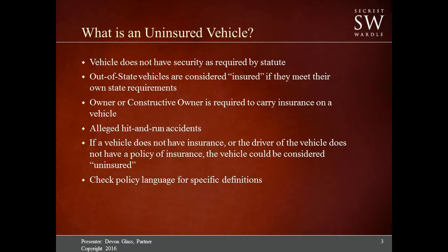An uninsured vehicle could also involve a hit-and-run accident. If somebody alleges their vehicle was contacted or pushed off the road and the other vehicle fled the scene with no information and that person is not found, that would be considered a hit-and-run and would be considered an uninsured vehicle under most policies. Typically, most insurance policies require contact with the vehicle in order to make this claim, but that is policy specific.